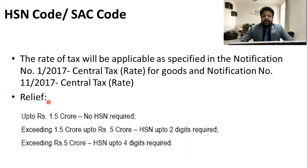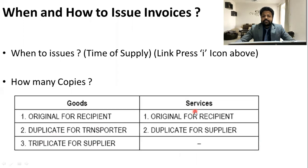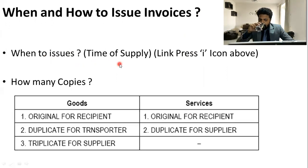There is a relief regarding HSN codes in tax invoices: up to a turnover of 1.5 crores, there is no need to write the HSN code. From 1.5 crores up to 5 crores, only 2 digits are required. Above 5 crores, 4 digits are required. One has to keep in mind that the use of HSN code or SAC code must be done as applicable. After that, we will see when and how to issue the invoice — which we have covered in a lot of detail in the time of supply session.